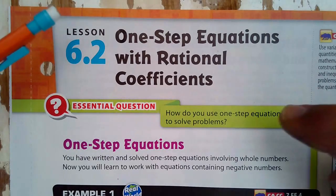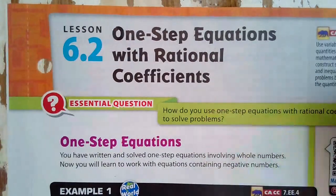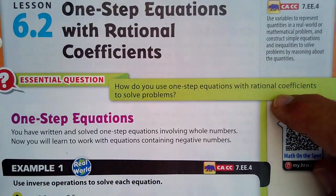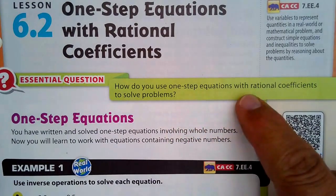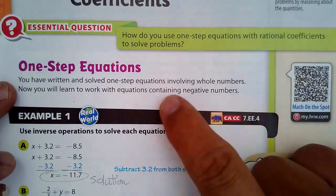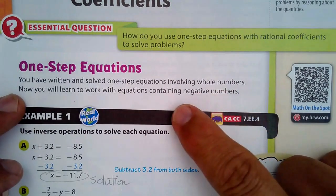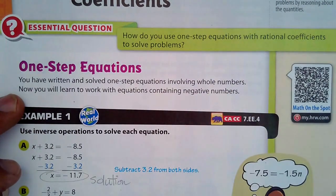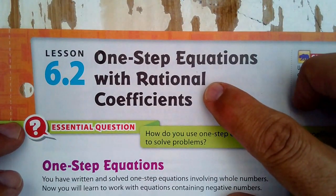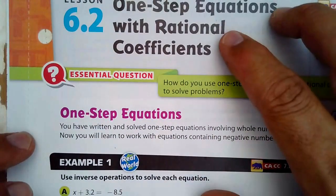You're going to learn about Lesson 6.2, which is One-Step Equations with Rational Coefficients. Our essential question, which you'll answer at the end of your guided practice, is how to use one-step equations with rational coefficients to solve problems. You've written and solved one-step equations involving whole numbers back in sixth grade. Now you're going to learn to work with these equations with negative numbers — and since they're rational, that means they could be decimals and fractions, because a rational number is a number that can be expressed as a fraction.